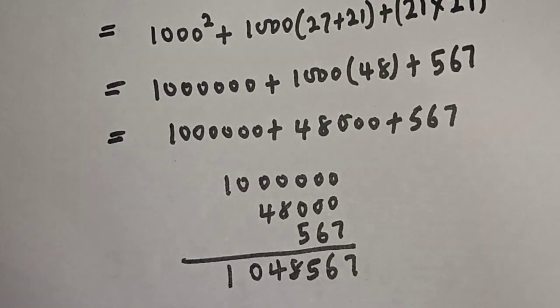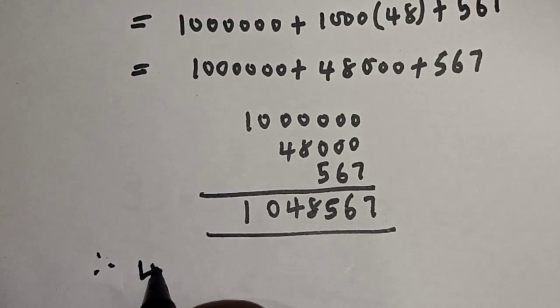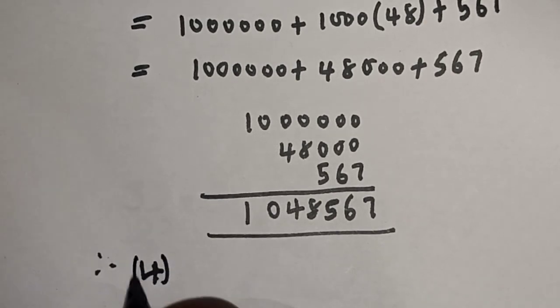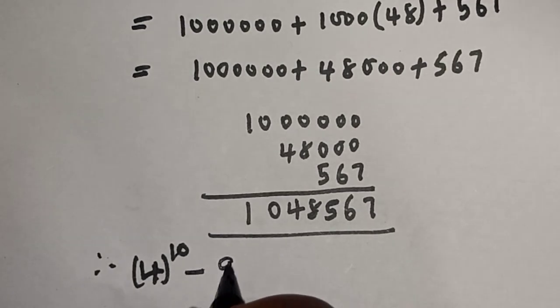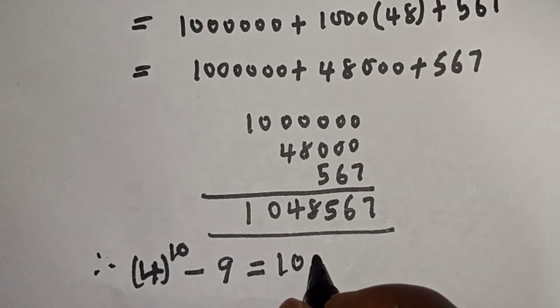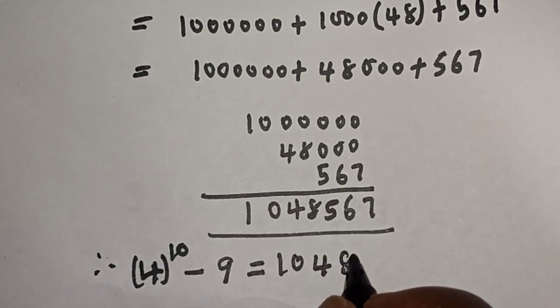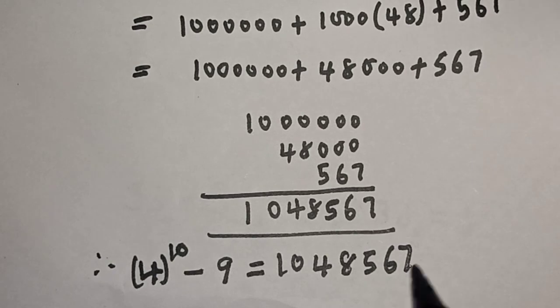The sum is 1,048,567. Therefore, 4 raised to power 10 minus 9 equals 1,048,567.